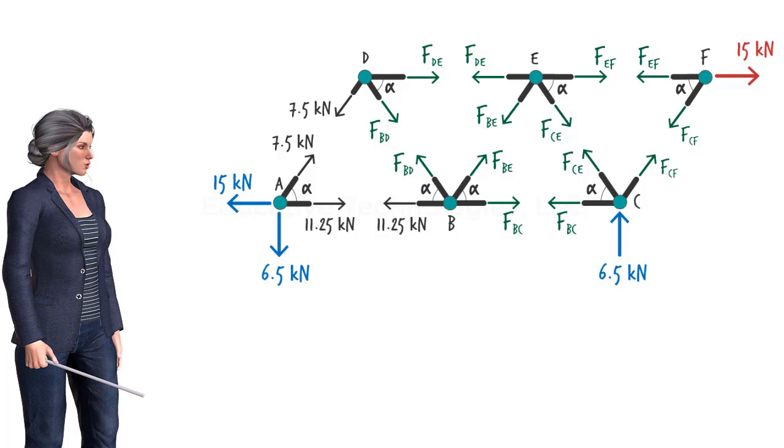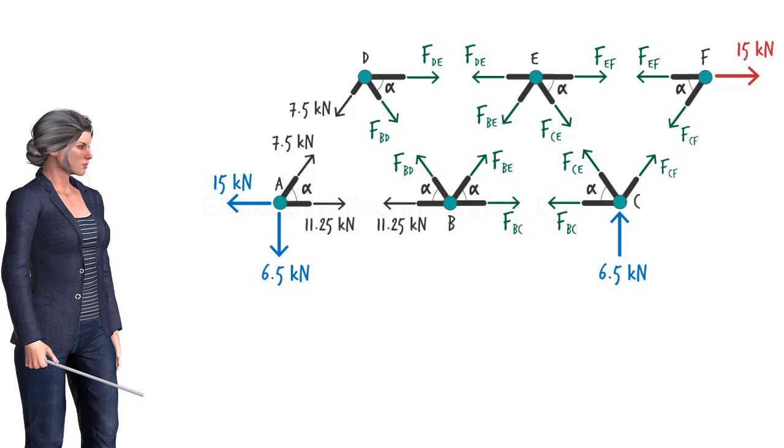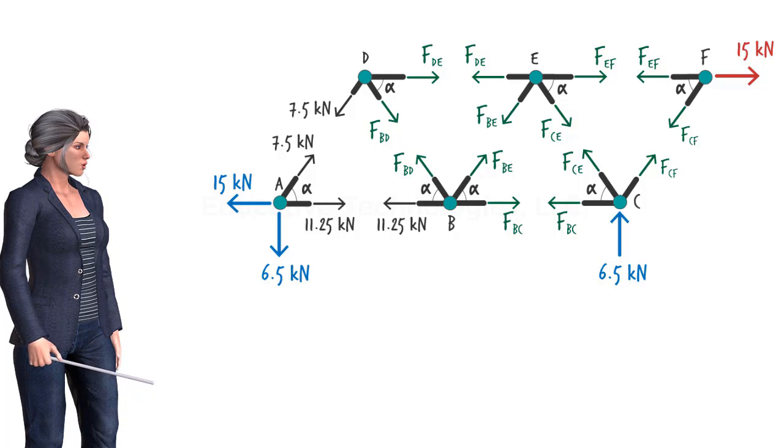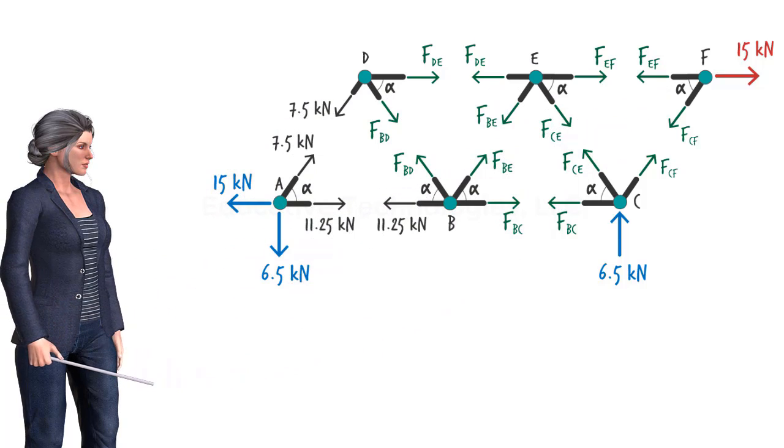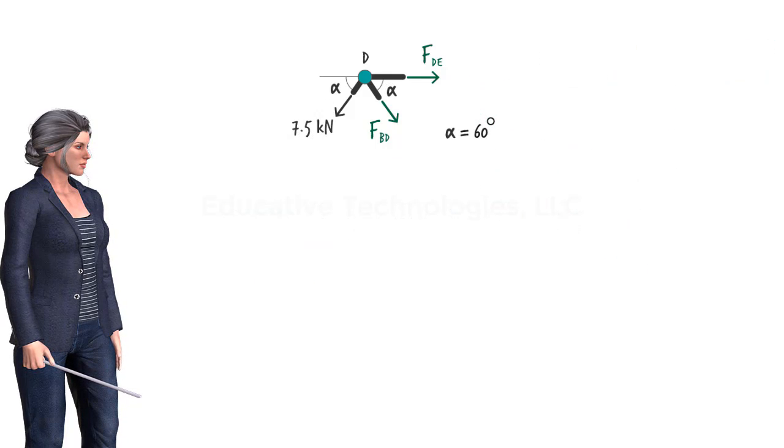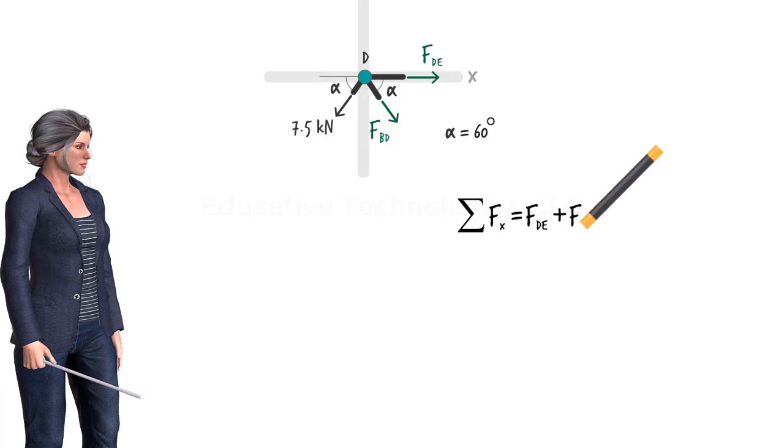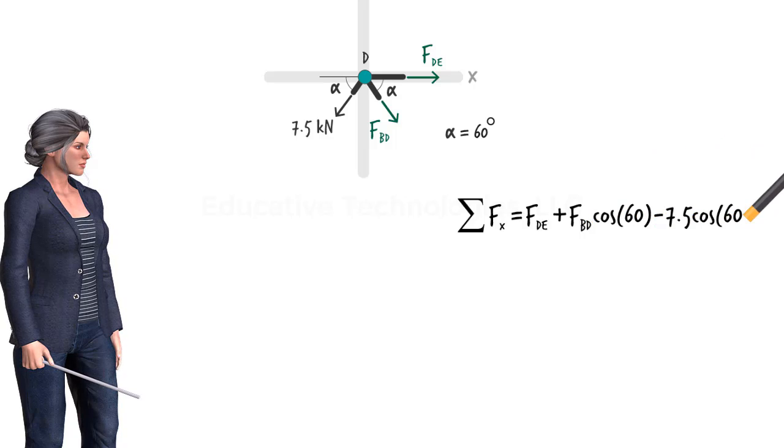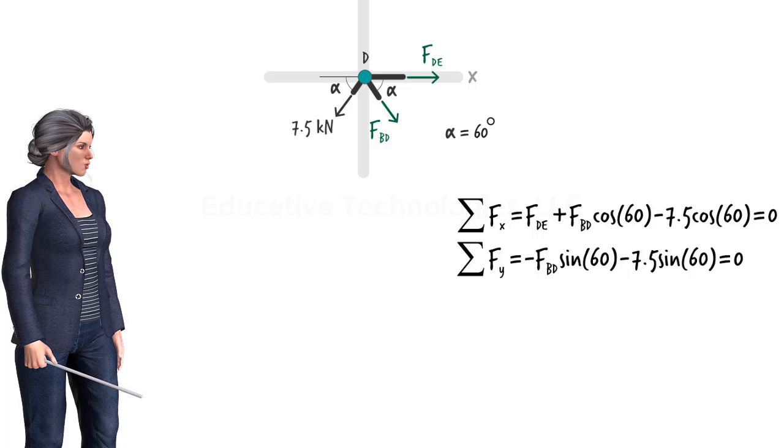There are seven additional unknown member forces to be determined. We can determine two of them by applying the equilibrium equations to another joint that has at most two unknown forces. At this point, two joints qualify, D and F. We can use either one in the next step. Let's use joint D. The unknowns at the joint are FBD and FDE. The equilibrium equations applied to the joint are... These equations yield.